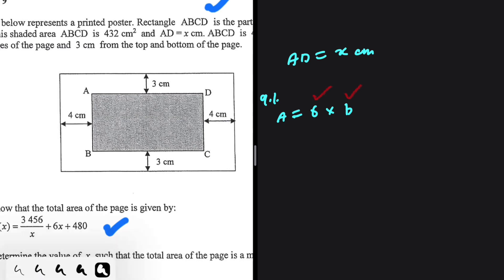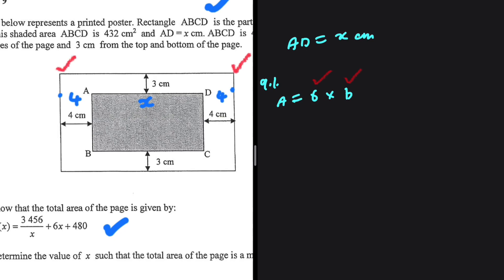We know that AD is x centimeters. From D to the edge we have 4 centimeters, and from A to the edge we have 4 centimeters. From this edge to this edge, let's call that our length.